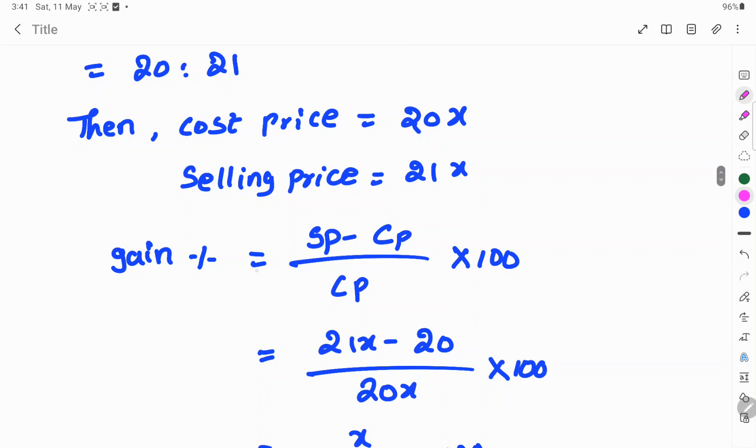So, gain percent is equal to selling price minus cost price by cost price into 100. This is the formula. So, selling price is 21x minus cost price is 20x by 20x into 100.